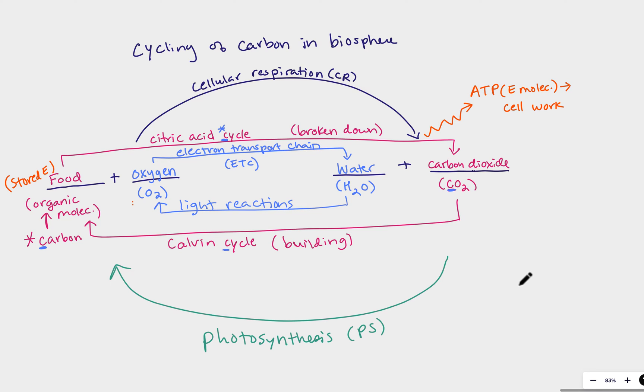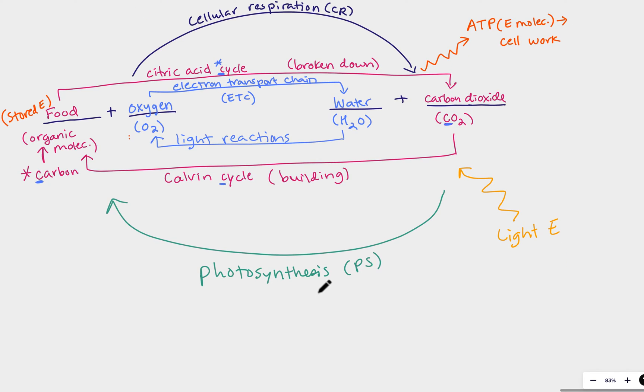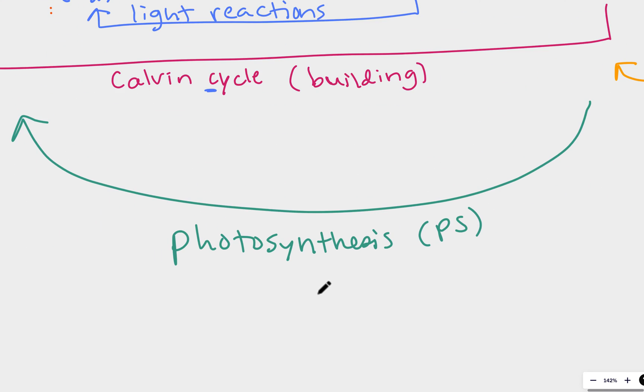In addition to water and carbon dioxide coming in to photosynthesis, we need an energy source and that is going to be our light energy. Let's remind ourselves who do these processes and where they occur. So photosynthesis in eukaryotes occurs in the chloroplast.